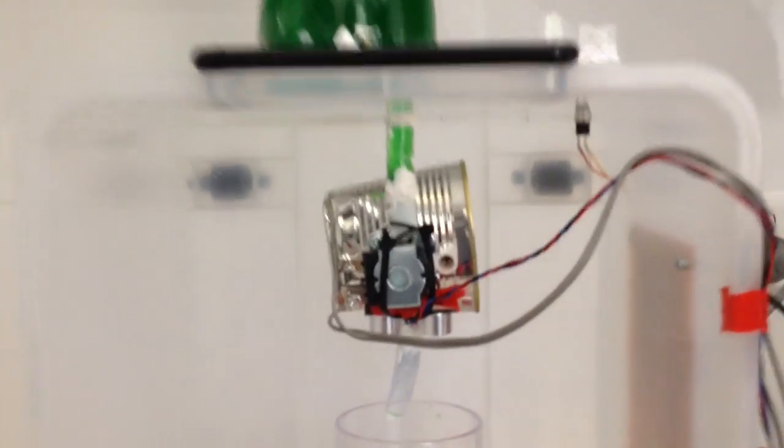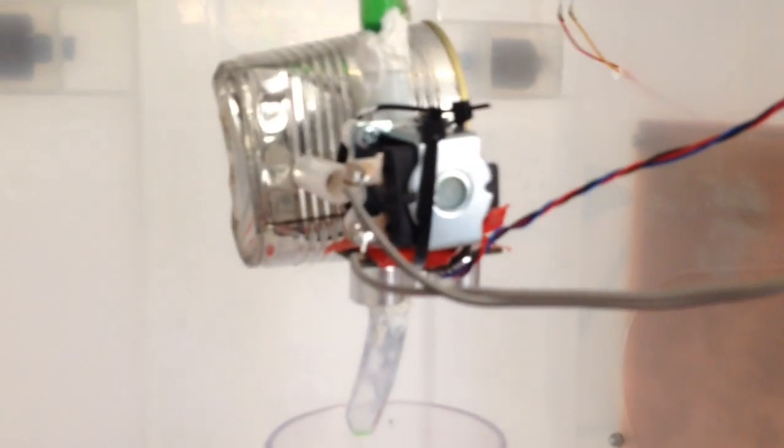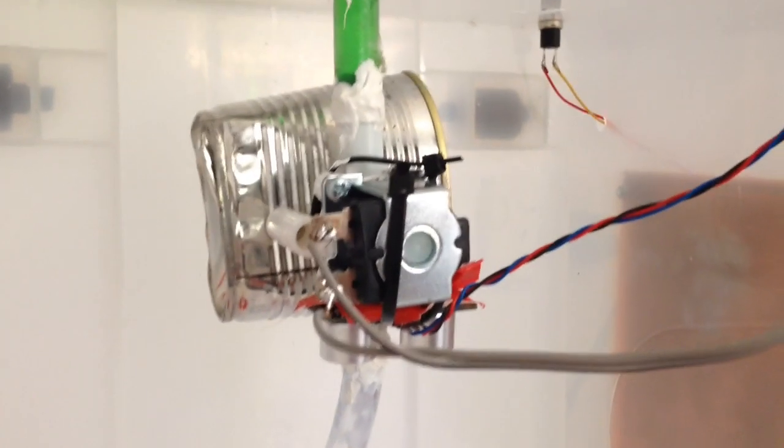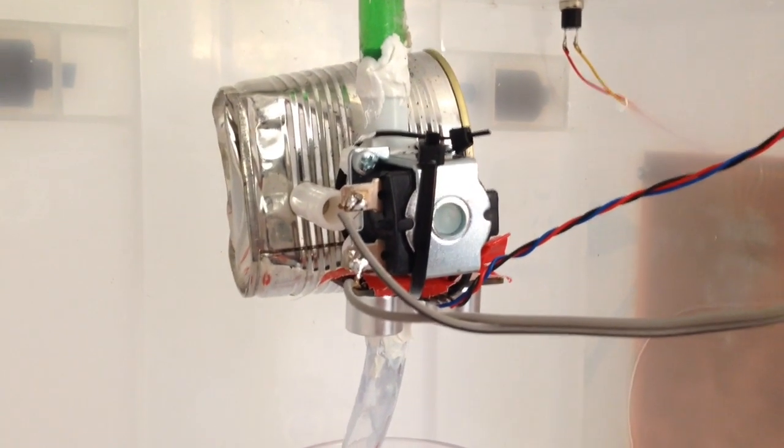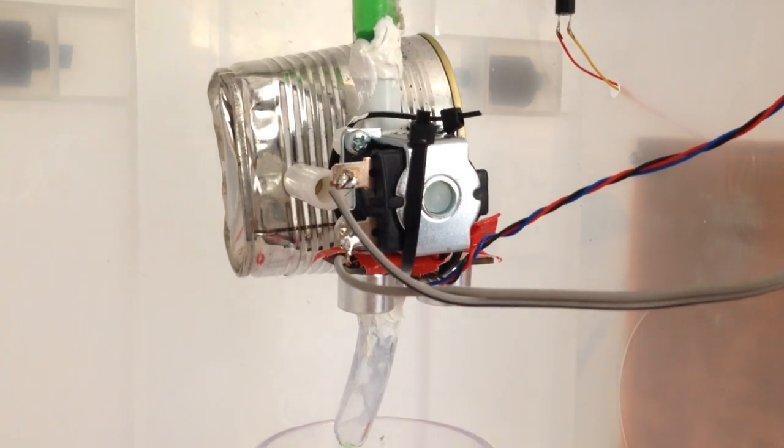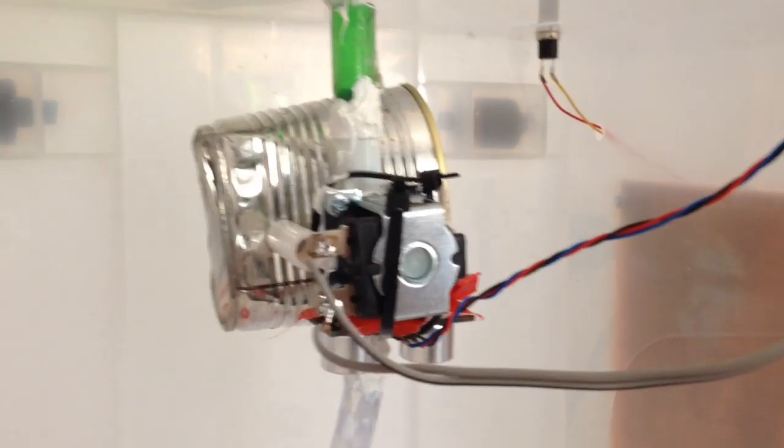Underneath that, if you follow the hose down, you'll see the 12 volt valve. Now this is activated by 12 volts DC. And when that receives the 12 volts DC, it opens the valve.